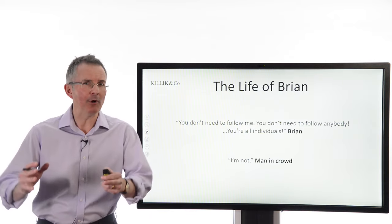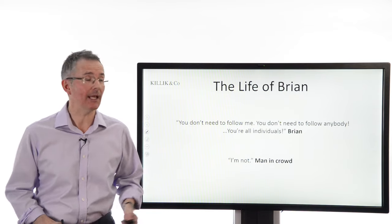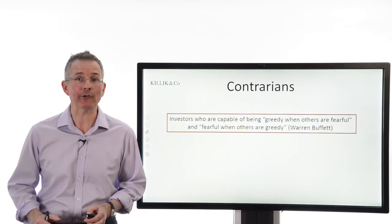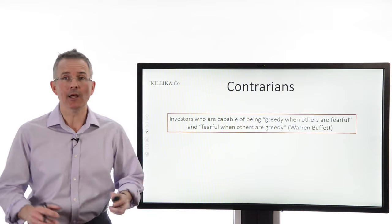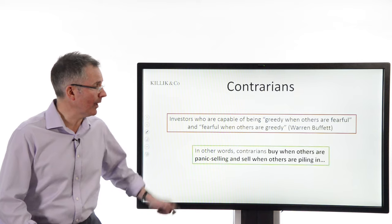So contrarians are people who are prepared to go against the crowd. In investing terms, what does that mean? It means, basically, you are capable, as Warren Buffett, the great US investor might have put it, of being greedy when others are fearful, and fearful when others are greedy.